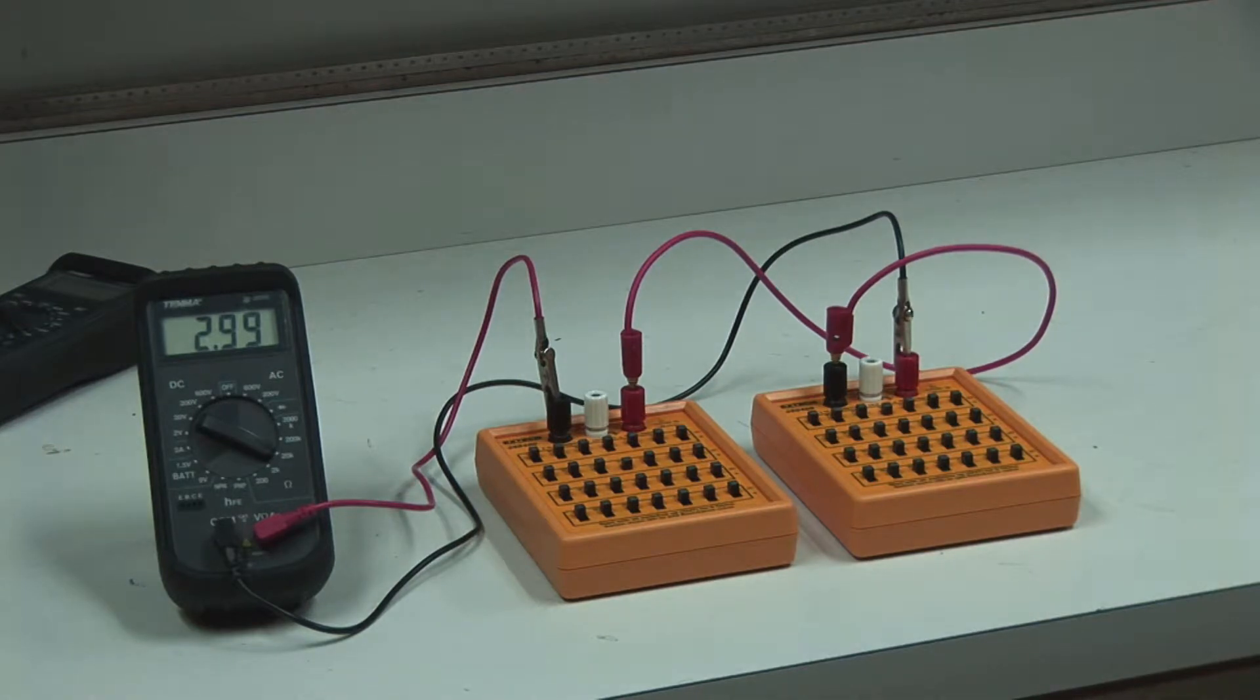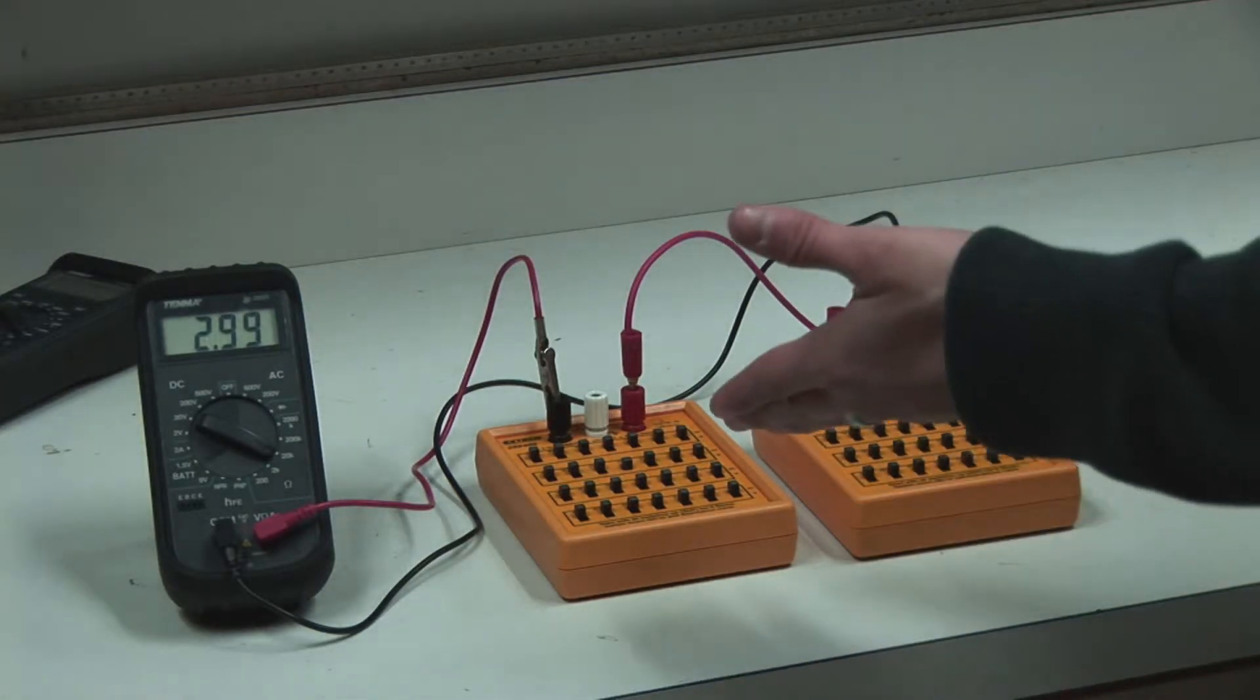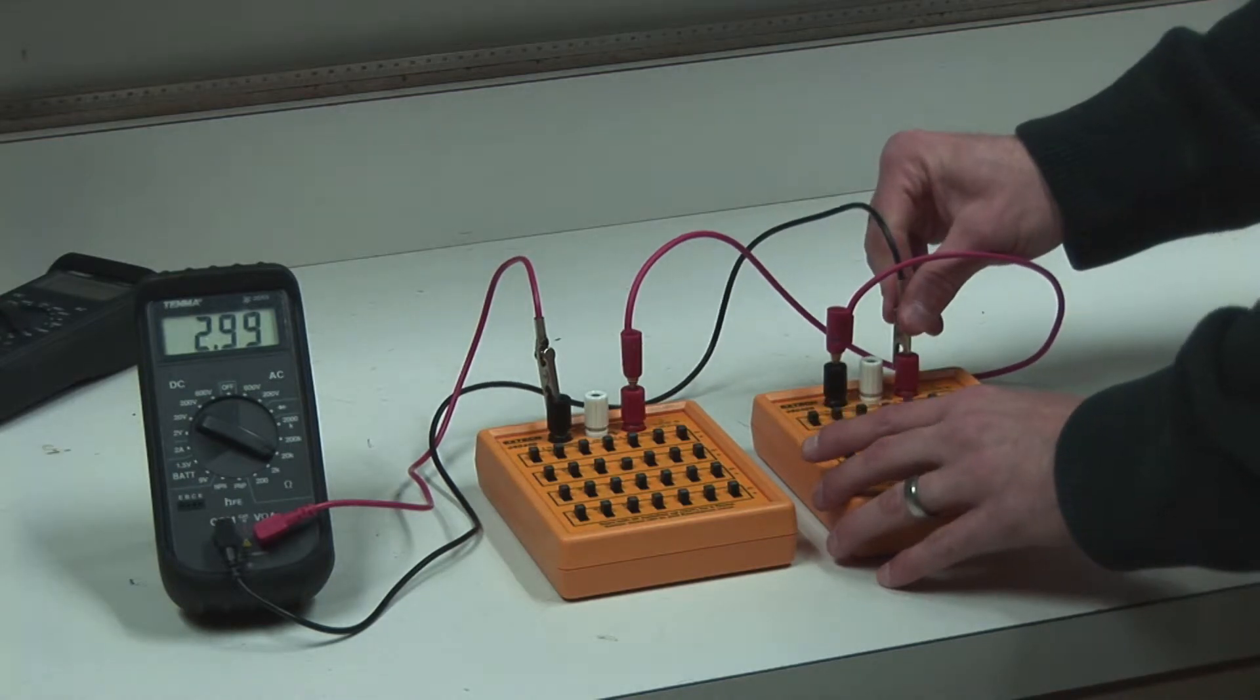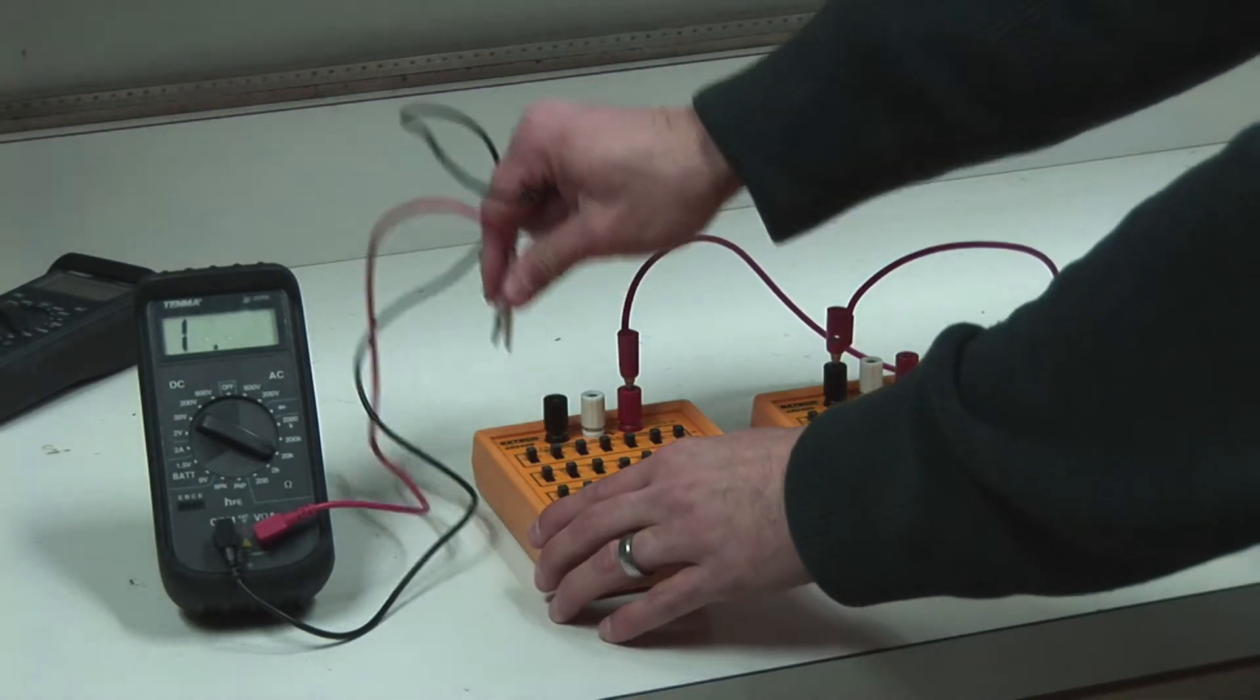And when I do that, you can see on the meter we end up with three kilo-ohms approximately. So it's simple addition. With resistors in series, you add the values and that gives you the total resistance.